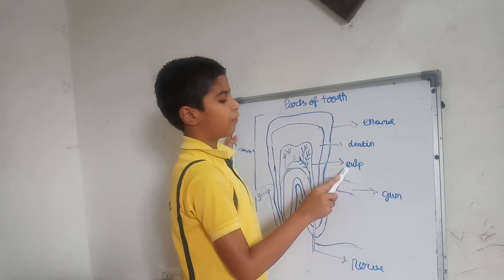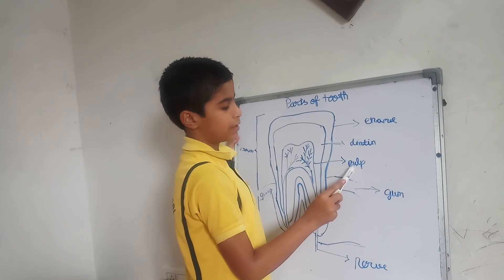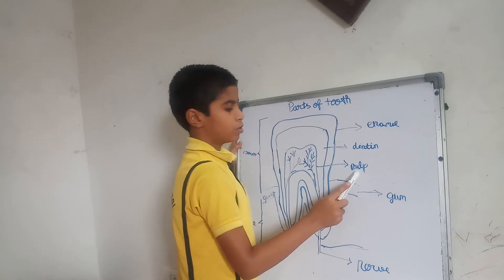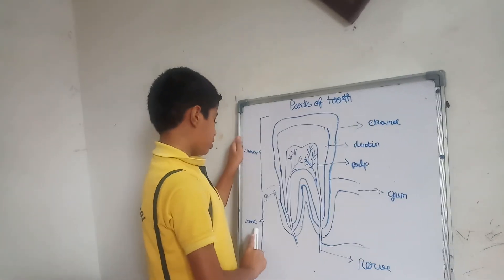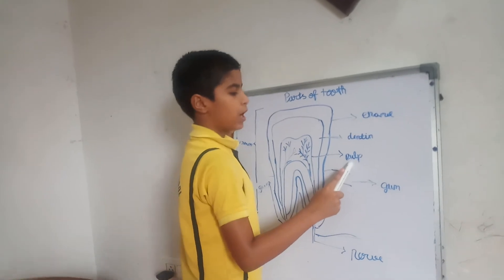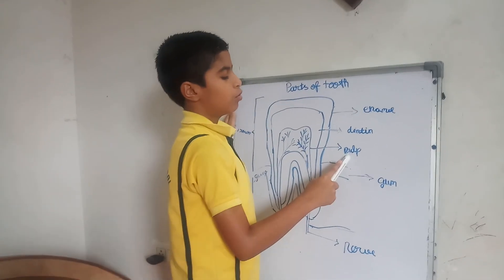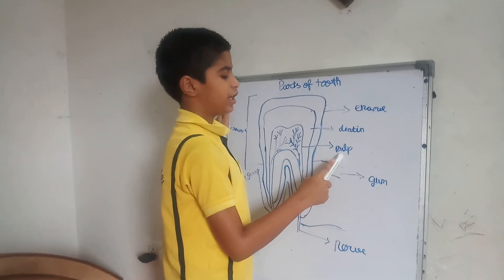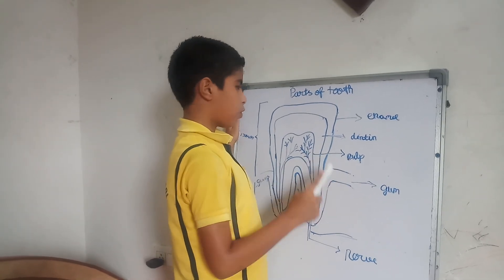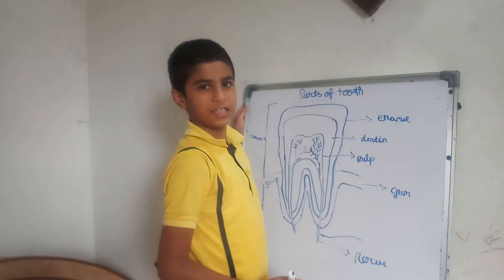Pulp is very soft and supplied with nerves and blood vessels. Pulp goes deep into the root inside the gum. Pulp helps to feel sensations such as cold and pain. Thank you and have a nice day.